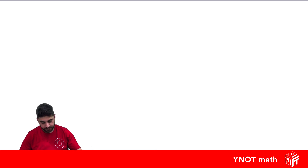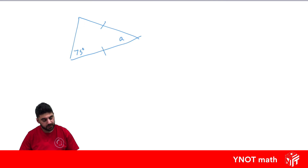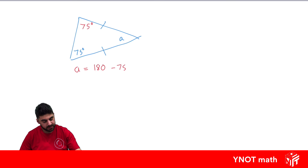In another example, we know one angle is 75 degrees and two sides are equal, with the unknown angle labelled a. We can identify this as an isosceles triangle. Since the base angles are equal, the other base angle is also 75 degrees. So a equals 180 minus 75 minus 75, giving a equals 30 degrees, using the angle sum of a triangle equals 180 degrees.